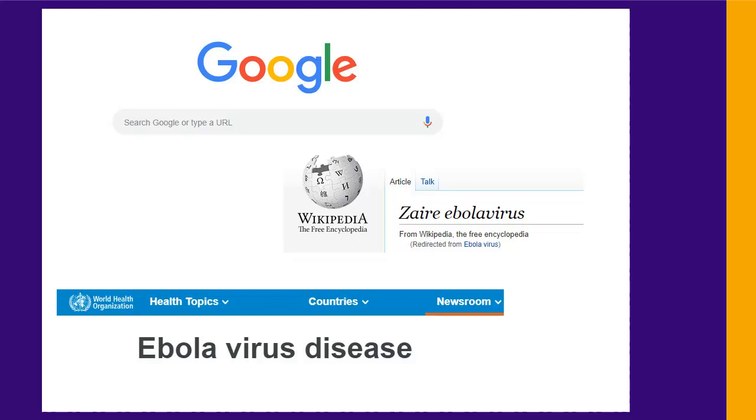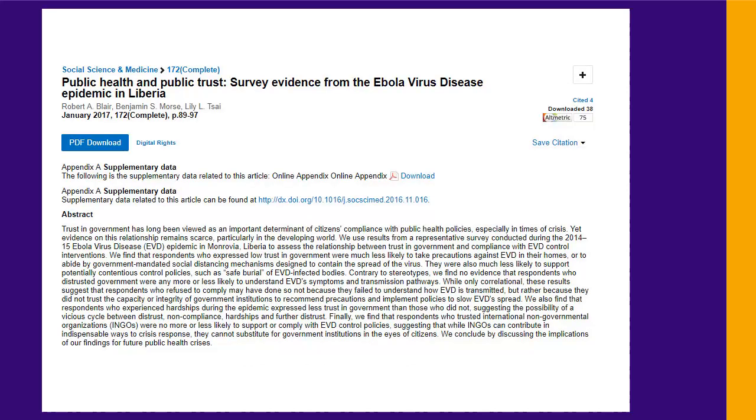The type of sources you used in high school were often not too important. You may have searched using Google and used websites or Wikipedia. In university, those sources are not generally seen as acceptable.